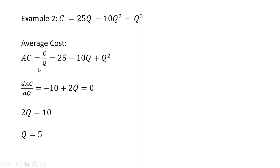Average cost is total cost divided by Q. That leaves us with this result. Taking the derivative of average cost with respect to quantity and setting that derivative equal to 0. The derivative of 25 is 0. The derivative of minus 10Q is minus 10. And the derivative of Q squared is 2Q.